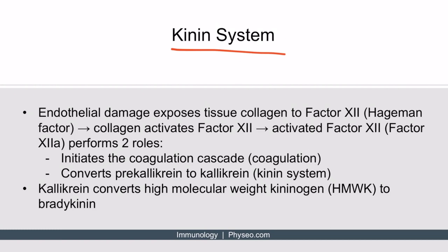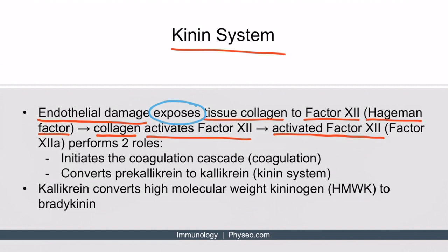Here's how the kinin system starts. There's endothelial damage, and this exposes tissue collagen to factor XII — another name for factor XII is Hageman factor. Collagen will actually activate factor XII, and then activated factor XII, written as factor XIIa, will perform two roles. The first role is that it will initiate the coagulation cascade, causing local coagulation. The second role is that it will convert prekallikrein to kallikrein, and kallikrein will then convert high molecular weight kininogen, HMWK, to bradykinin.